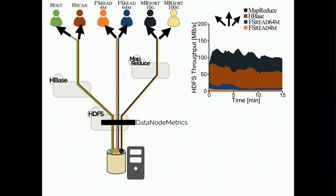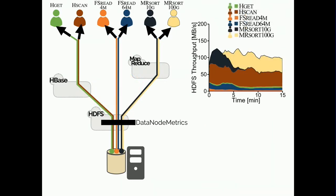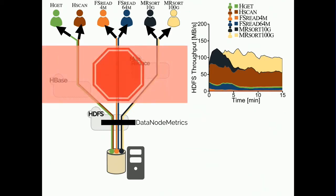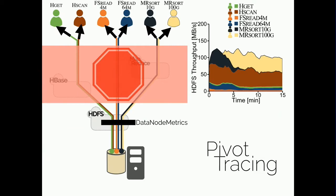Taking this another step further, suppose you're interested in disk throughput grouped by the top-level client applications. This is a particularly useful grouping because it tells you which users and workloads are ultimately consuming the disk. But anything above HDFS's direct clients is certainly going to be completely opaque to HDFS. This is also the kind of grouping we're going for with Pivot Tracing. Pivot Tracing can in fact obtain these as well as essentially arbitrary metrics from arbitrary points in the system.